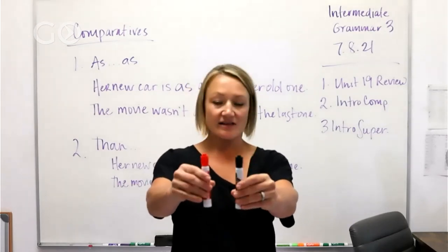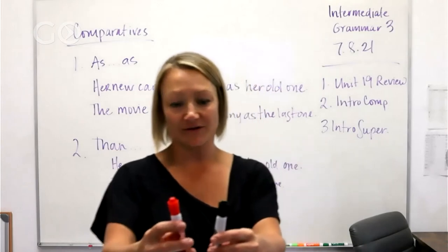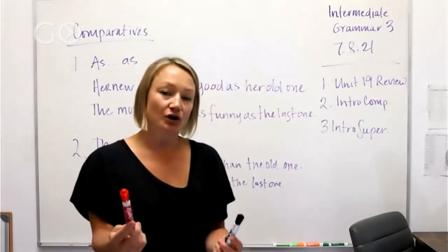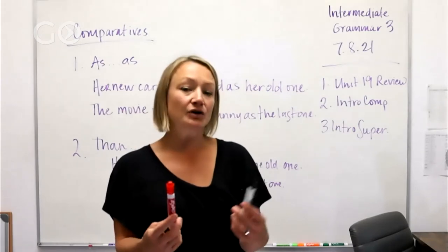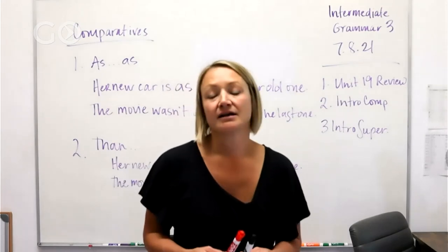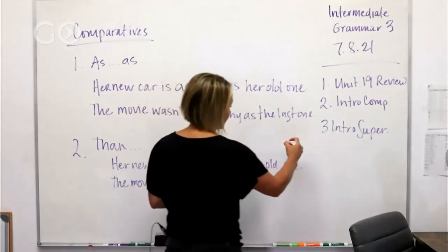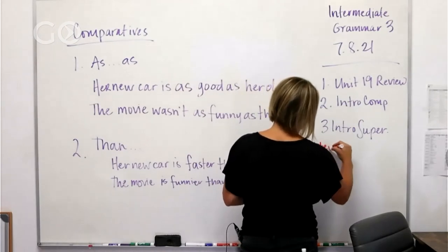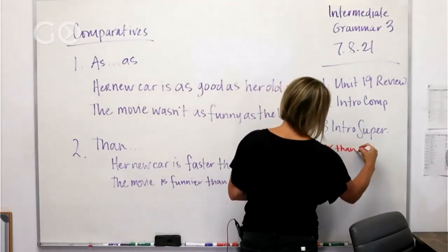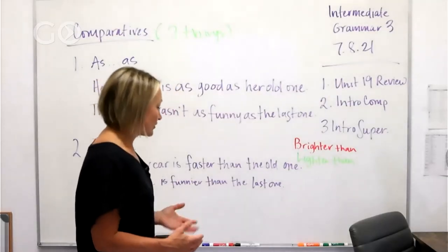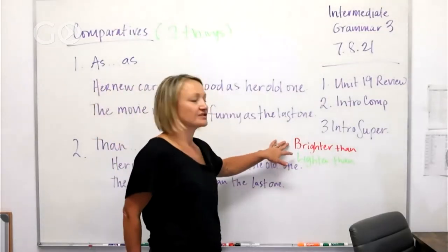They are not the same color. You could say the red marker is brighter than the black marker. So we could say that. Now we go down here, the red marker is brighter than. So let's take a look, we have a couple of examples.